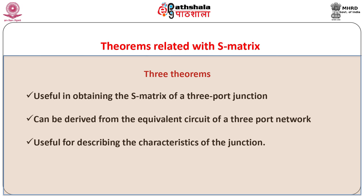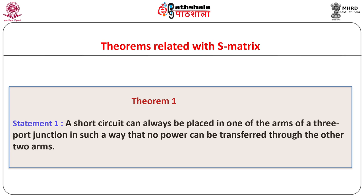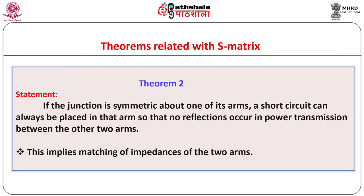From the equivalent circuit of a three port network we can derive three theorems of a three port junction. These theorems are useful in obtaining the S matrix of a three port junction, with the help of which one can describe the characteristics of the junction. Statement number 1: a short circuit can always be placed in one of the arms of a three port network in such a way that no power can be transferred through the other two arms. Statement number 2 says: if the junction is symmetric about one of its arms, a short circuit can always be placed in that arm so that no reflections occur in power transmission between the other two arms.